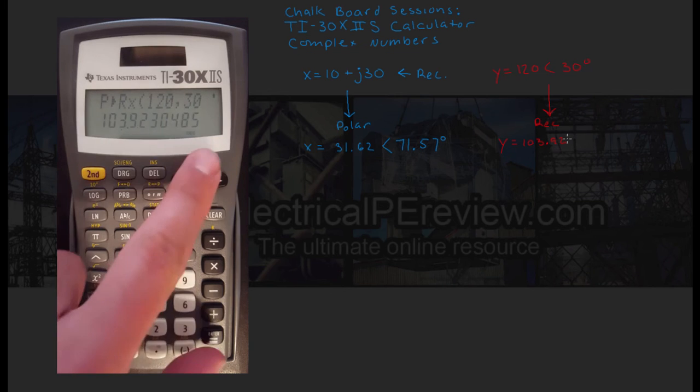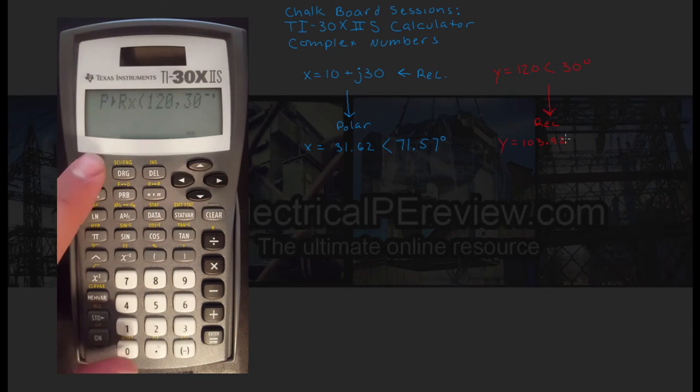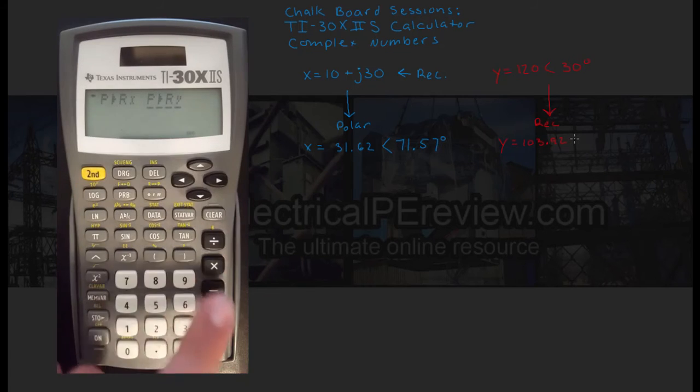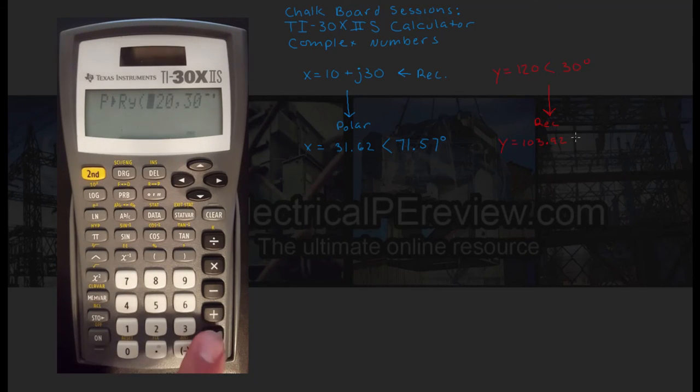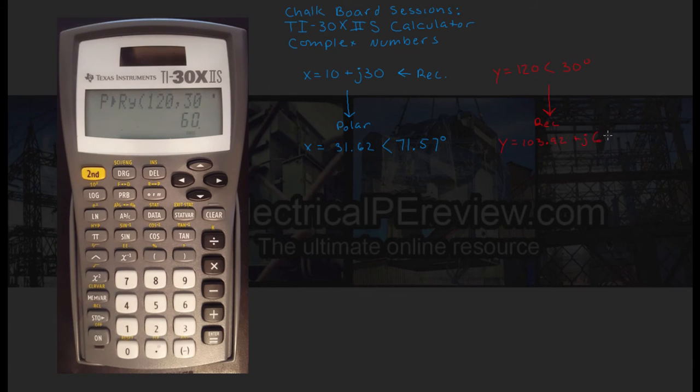Go back up, select real to polar again, slide all the way over to p to ry, hit enter. Hit enter one more time. We've got our imaginary component of 60.